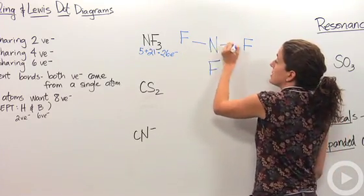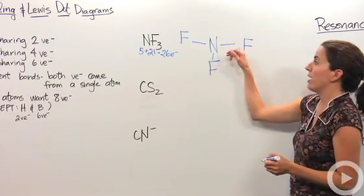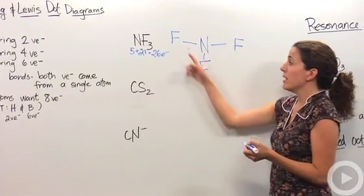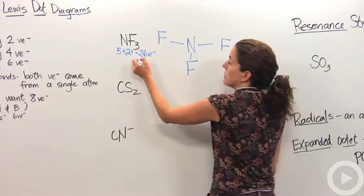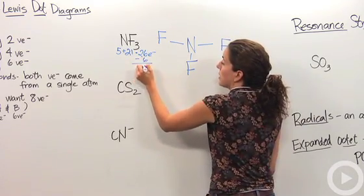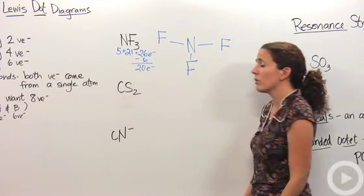So we know they're bonded together in some way, and we're going to note that by the lines connecting them. In each line, we're going to say there's two electrons. We just used two, four, six electrons. Those are already used up. So now we have 20 electrons to work with.